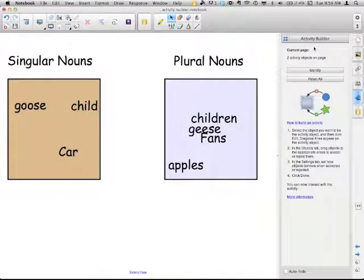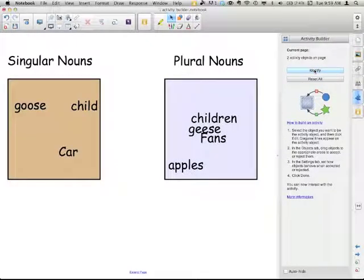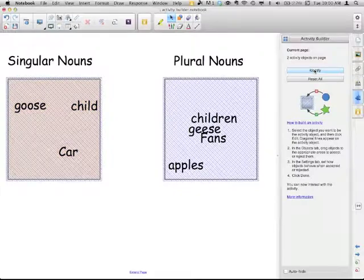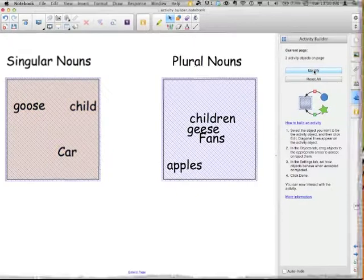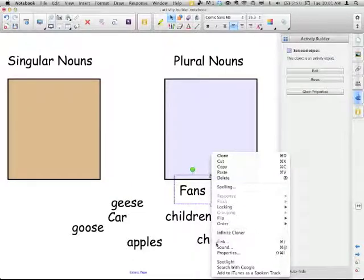So you'll notice, too, here, it says current page, two activity objects on the page. Identify, if you need to find them, if you get a file from someplace else and it has one of these. If you're not sure what objects are set to accept or reject things, you can click the identify, and it will put the little blue lines on each one. So remember that we had the sound play the sound, so if you attached a sound to it.